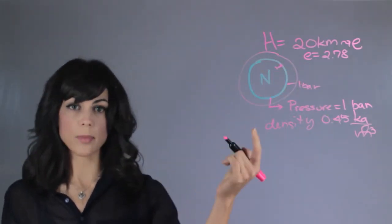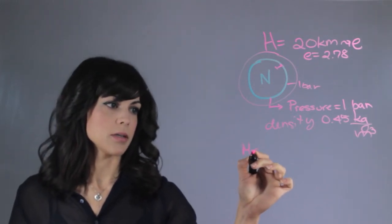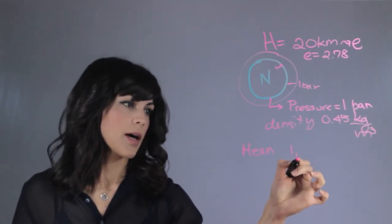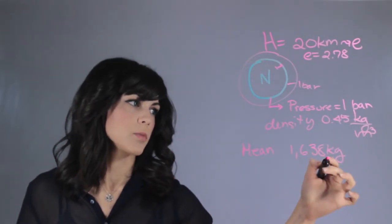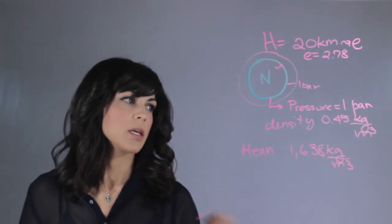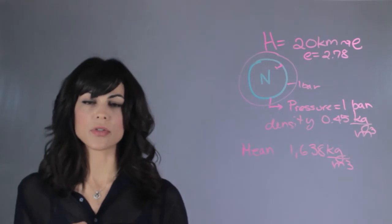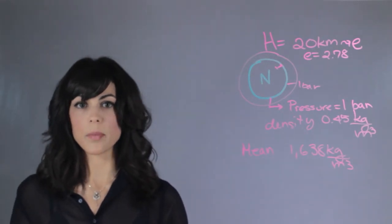So generally the entire planet, the mean density is 1,638 kilograms per cubic meter. So as you can tell by the time that we get to the surface, the density has already dropped by a lot.